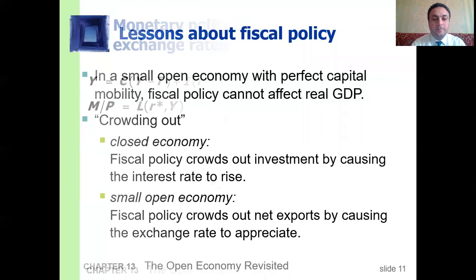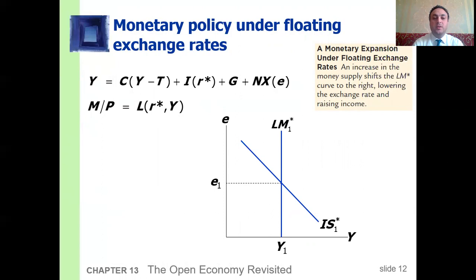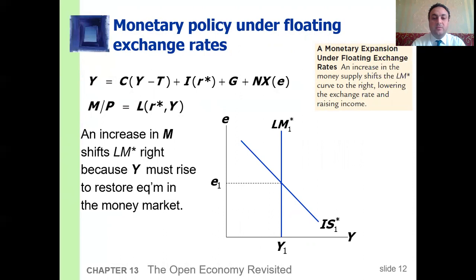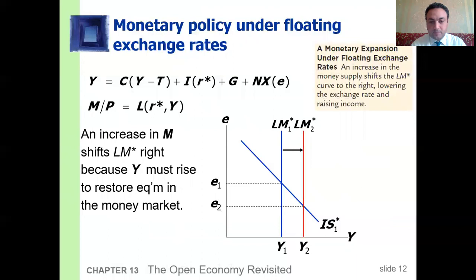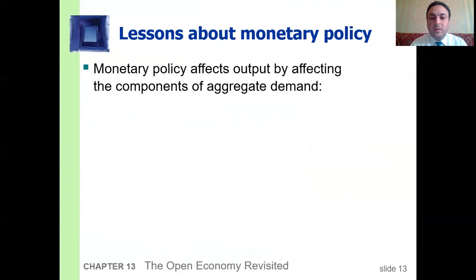Under the floating exchange rate, an increase in the money supply shifts the LM curve to the right, lowering the exchange rate and raising income. Output must rise to restore equilibrium in money markets, shifting output from Y1 to Y2. Monetary policy affects output — unlike fiscal policy — by affecting the components of aggregate demand.